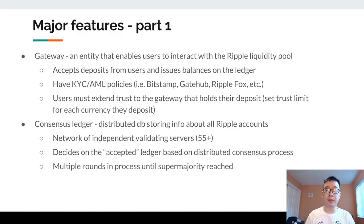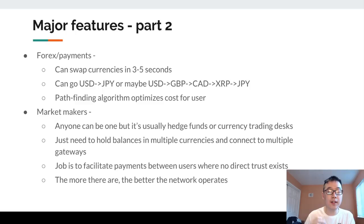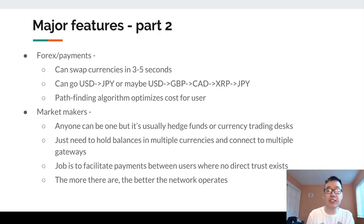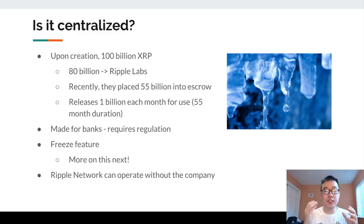Second is the consensus ledger — a distributed database storing info about all Ripple accounts, with a network of over 55 independent validating servers. They come together to decide on the accepted ledger based on a distributed consensus protocol, going through multiple rounds until a supermajority is reached. Third, forex and payments: Ripple can swap currencies in three to five seconds, jumping from USD directly to Japanese yen, or optimizing through intermediate currencies. The pathfinding algorithm automatically optimizes for cost. Finally, market makers — usually hedge funds or currency trading desks — hold balances in multiple currencies and connect to multiple gateways to facilitate payments where no direct trust exists.